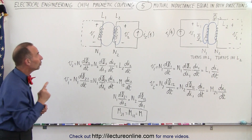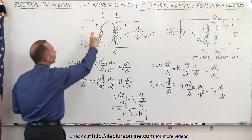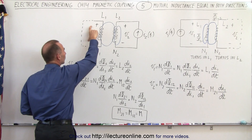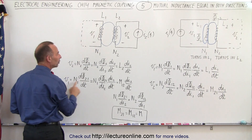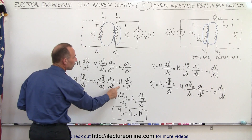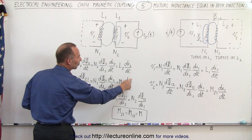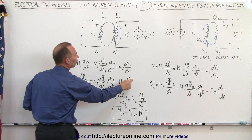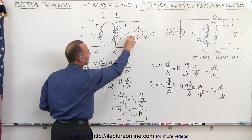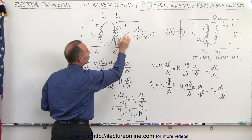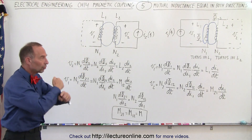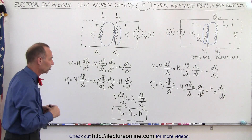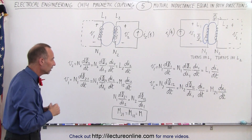But now what would be the voltage across the first inductor? It's going to be equal to the mutual inductance times the rate of change of the current in this circuit with respect to time. So it works across in the other direction as well.